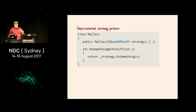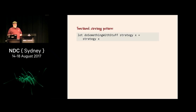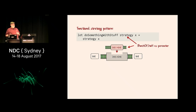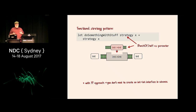Let's look at the strategy pattern. In OO you'd have a class with dependency injection on an interface. In a functional language, you just pass the strategy in as an extra parameter - it's a function you pass in. You've got a little slot for it, you pass in that extra thing, and you've parameterized the function with the strategy. Anything will fit that strategy as long as it's the right type - you don't have to inherit from anything.